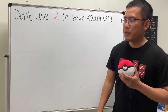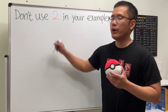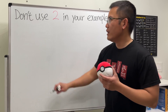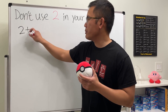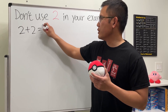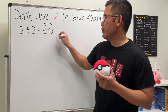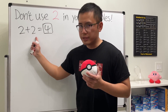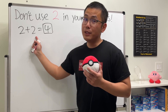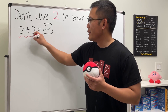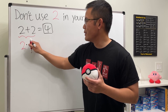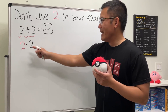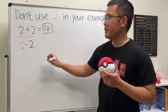Let's talk about why we should not be using the number 2 in our math examples. First off, we know that 2 plus 2 equals 4. No problem with that, right? But notice when we add two 2s together, it's the same as saying 2 times 2, because we're adding two 2s together.